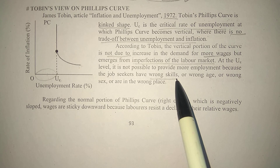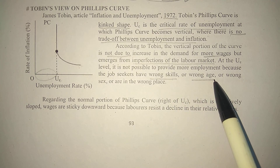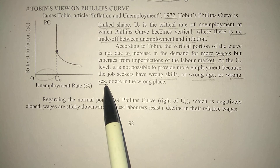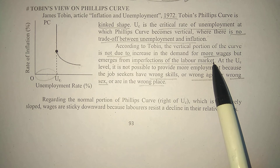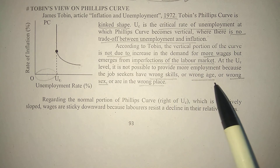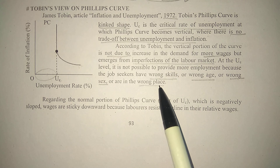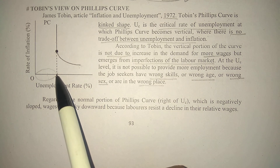Either the job seekers do not have the skills that the market requires, or they are not in the required age group that the market needs, or they are not of the gender (male/female) that the market demands, or they are not located at the place where the demand for labor exists. Any of these reasons can apply — this is what we call labor market imperfection. Due to these imperfections, this critical rate of unemployment is formed and will always remain.